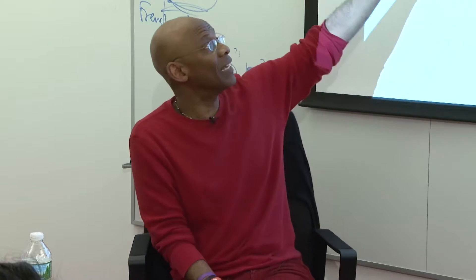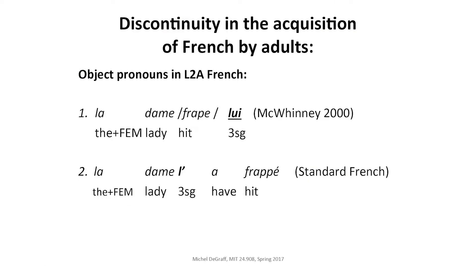It's a fine hypothesis, and children do that. In the same way, if you know that your language has verb-object order — you say 'frappe le ballon,' hit the ball — why would you, when you have a pronoun, put it before the verb? It seems to be a natural hypothesis as a learner to assume that a pronoun, like a full noun, will come after the verb.